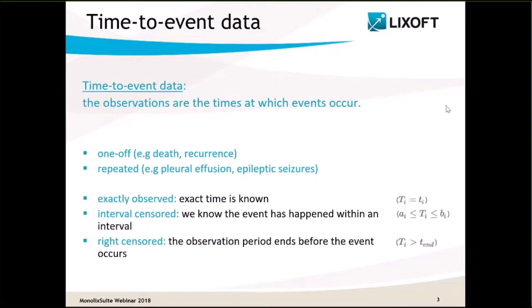Moreover, the observation of the event's time can be of different types. It can be exactly observed or interval-censored, when the exact time of the event is not known but the time interval is available. Furthermore, if there is a possibility for an event to occur after the end of the observation time, it should be taken into account — it is called right censoring.